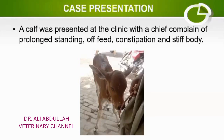Today I am going to present a very common and typical case of nervous disease. This case is basically related to a calf, but this disease is also very common in horses. First, I will present the case, then make a tentative diagnosis based on signs, symptoms, and physical examination findings, followed by differential diagnosis, pathogenesis, and treatment plan.